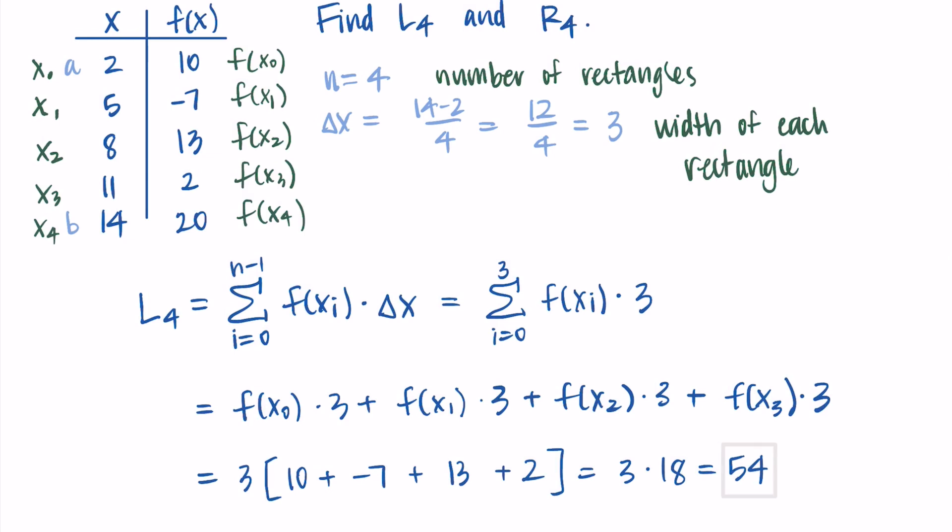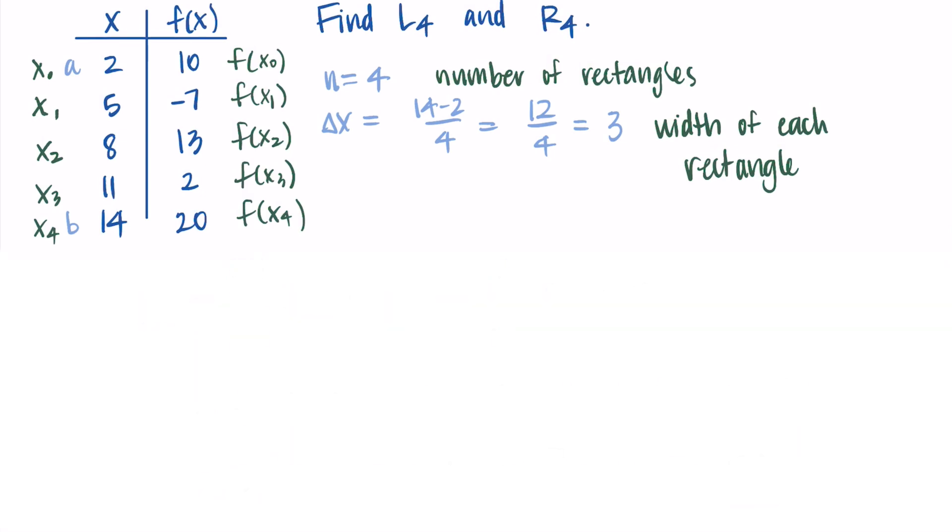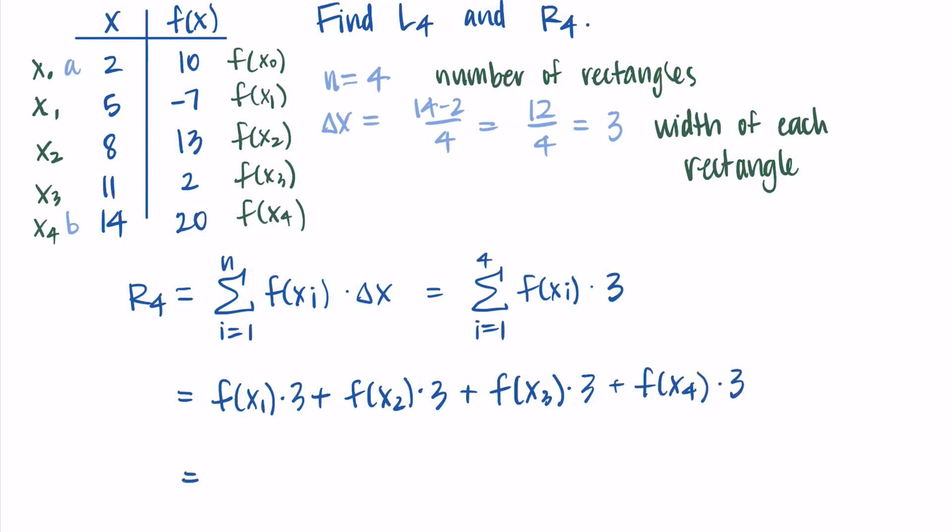Let's repeat this process for R sub 4. I'll try to go through this one a little more quickly, since it's really similar. So again, I plug in i equals 1 through 4 in for my i's. I'm going to factor out the 3 once I've written that all out. And again, this factoring out the 3, you might just be kind of jumping to this step if you're doing these problems on your own. I'm just trying to show you everything that's going on.